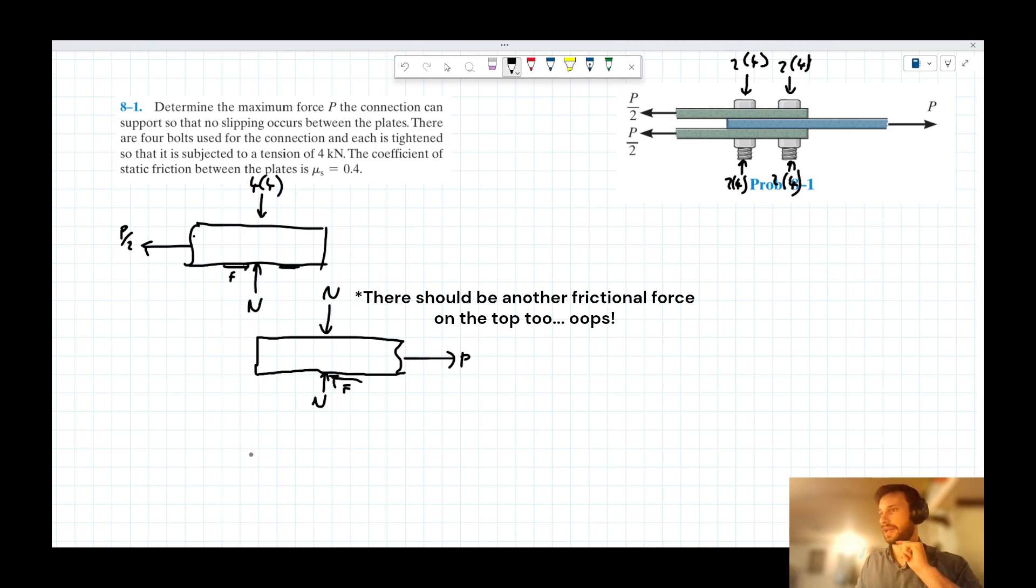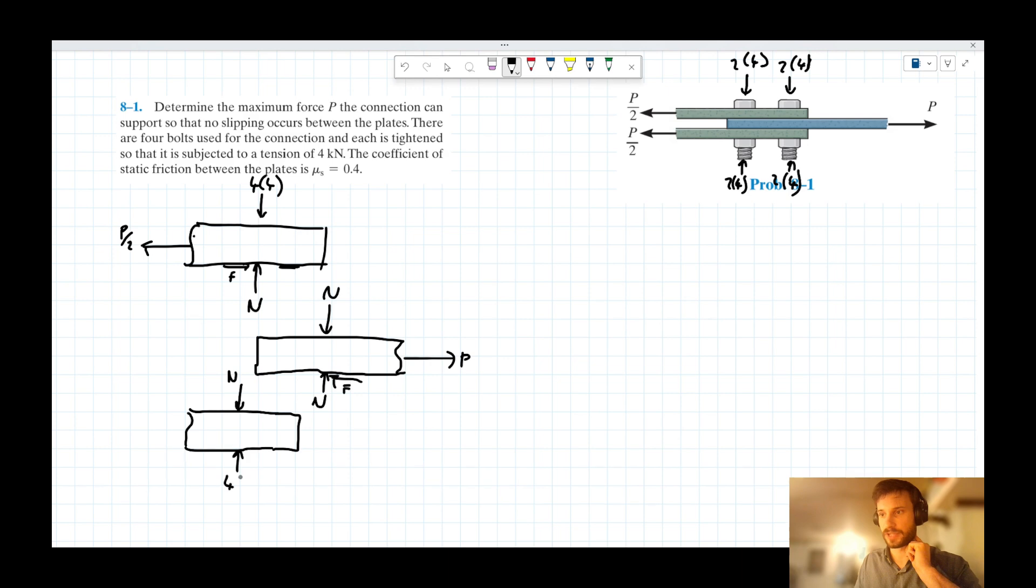And let's have a look at our bottom plate here. We could show like this. This isn't to scale. And I'm bad at drawing. But we'd have a normal force acting here. And we have our four lots of four kilonewton forces acting here as well.